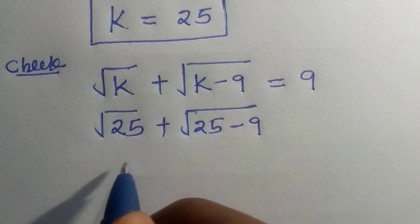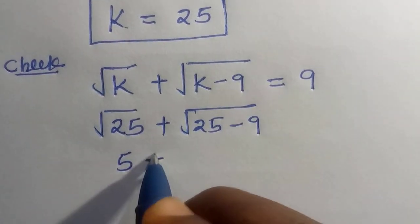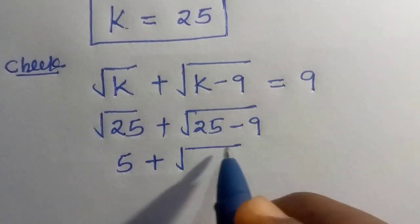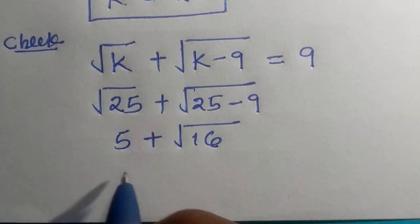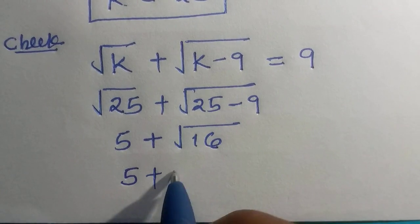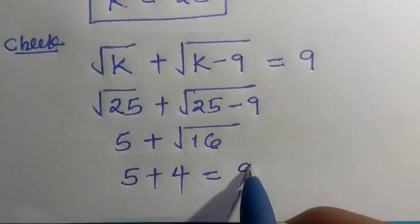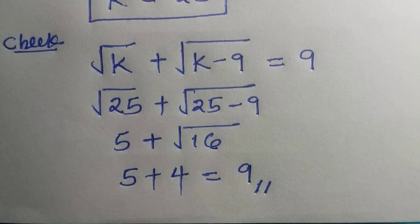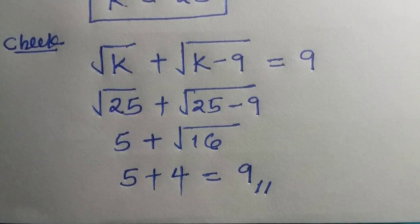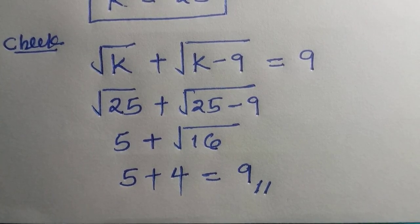Then, square root of 25 is 5 plus, 25 minus 9 is 16. Then, square root of 16 is 4. And 5 plus 4 equals 9, which shows that the left-hand side equals the right-hand side as k equals 25, which satisfies this problem.